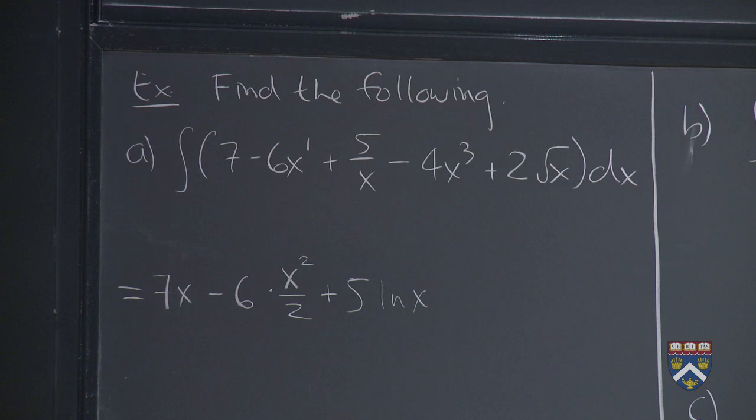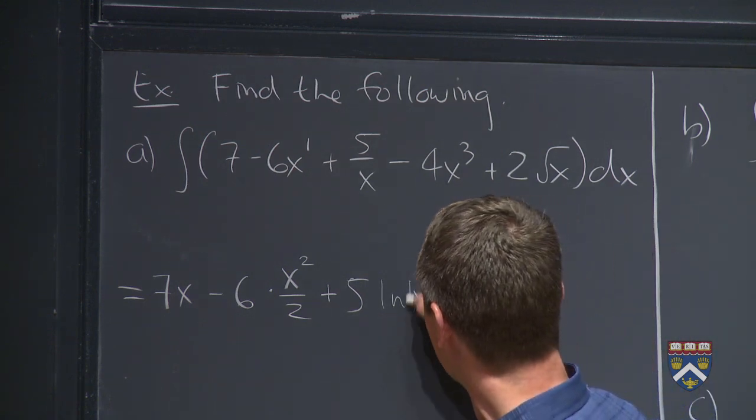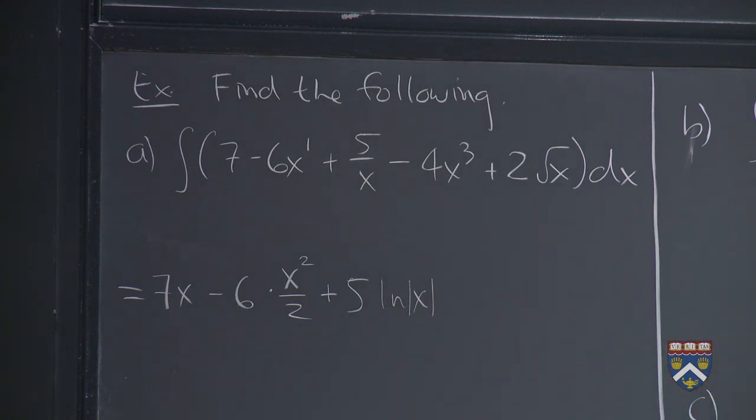Except what did we talk about in the last segment? What do we have to put in here to avoid losing half a point, because we might be plugging negatives into something that we're not allowed to? We have to put those absolute value bars in there, right? As we discussed in the last segment.